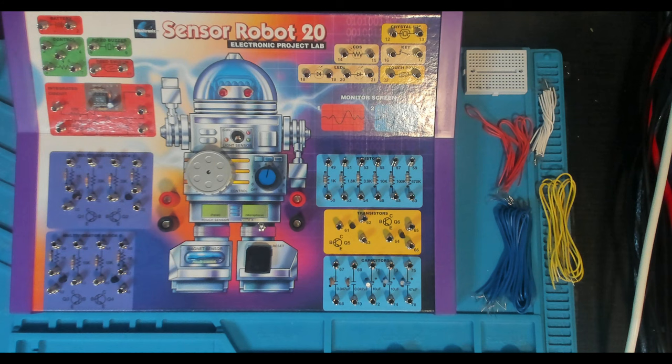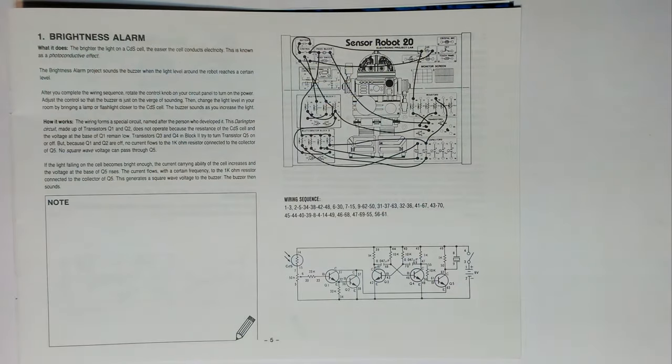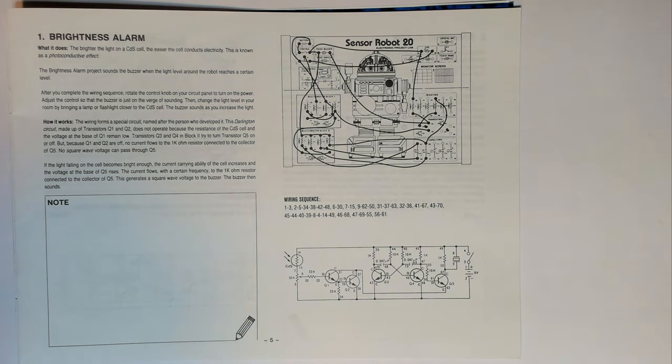Here we are in the booth. We're going to put together our first project in the Sensor Robot 20 Maxitronics Project Lab. Let's have a look at the brightness alarm schematic. The brighter the light on a CDS cell, the easier the cell conducts electricity. This is known as a photoconductive effect. The brightness alarm project sounds the buzzer when the light level around the robot reaches a certain level.